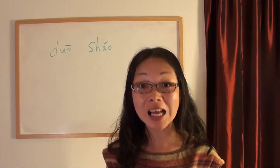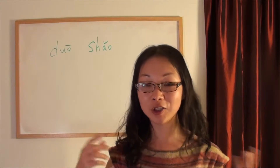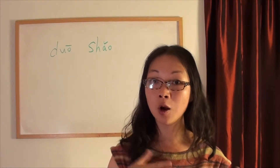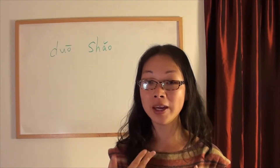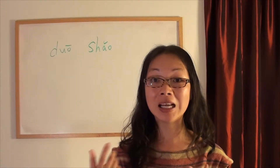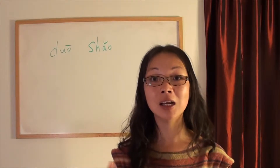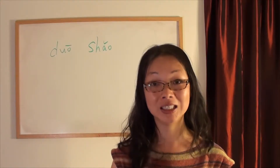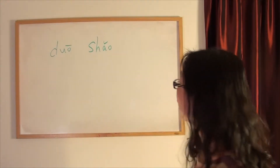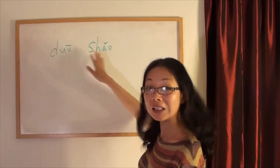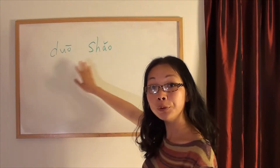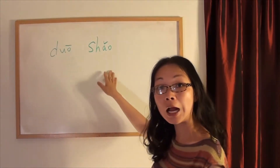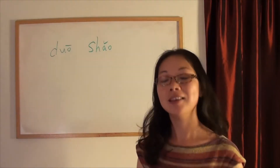昨天我们学了... 昨天 is a time word — we always put it at the beginning. 我们学了 means 'we learnt.' 了 means the action is done. 昨天我们学了多和少. 多和少. 和 means 'and.'